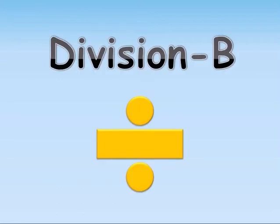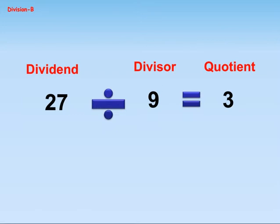Division B. In this example, twenty-seven is dividend, nine is divisor, and three is the quotient.